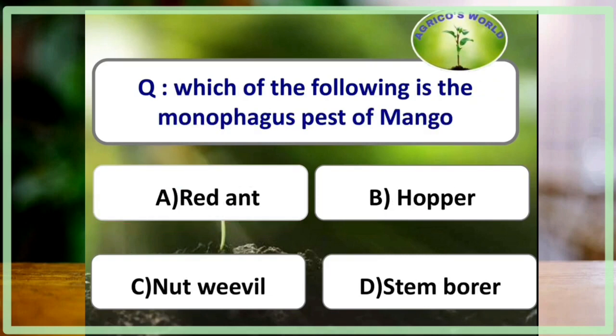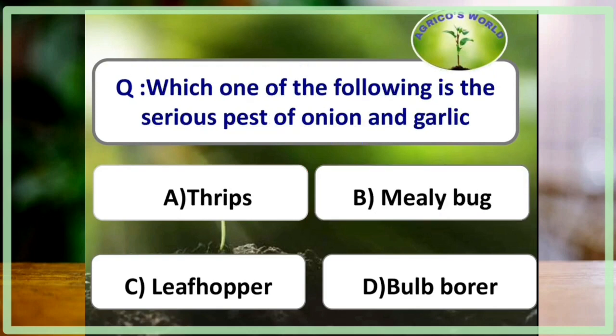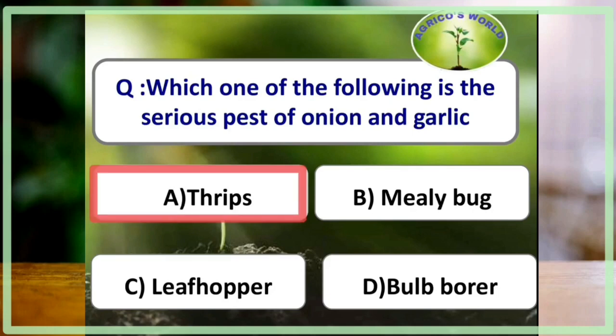Which of the following is the monophagous pest of mango? The answer is nut weevil. T-shaped marking on marble-sized mango fruits is a characteristic symptom of nut weevil. The serious pest of onion and garlic is thrips.